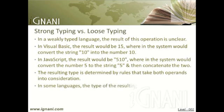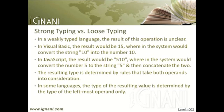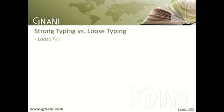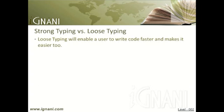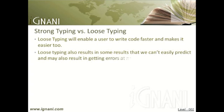In some languages, the type of the resulting value is determined by the type of the leftmost operand only. Looking at these scenarios, we can say that using loose typing enables a user to write code faster and makes it easier. But it also returns results that we can't easily predict, and may result in errors at runtime.